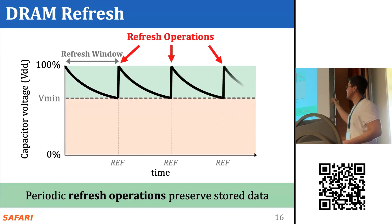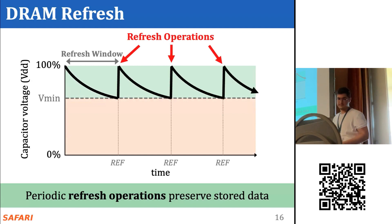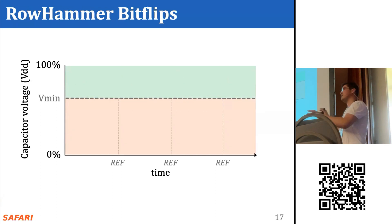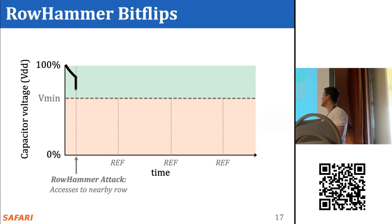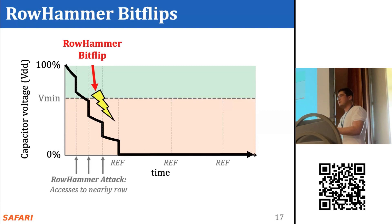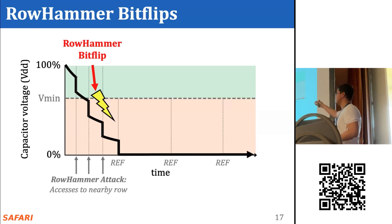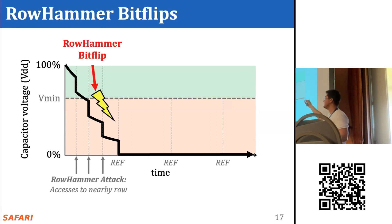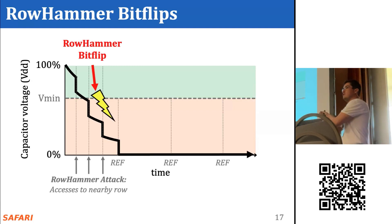Now let's look at the same diagram in the context of a RowHammer attack. If an attacker activates a nearby row enough times, the charge leakage rate can be accelerated to a point of failure. After this point, no matter how many refresh operations we schedule, the refresh operation will see the value as zero and restore the incorrect value of the cell.